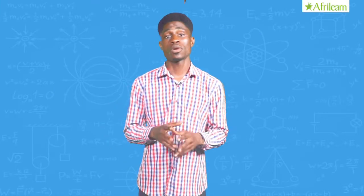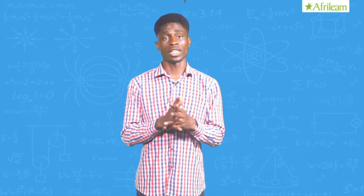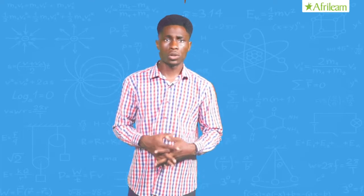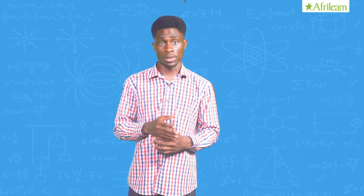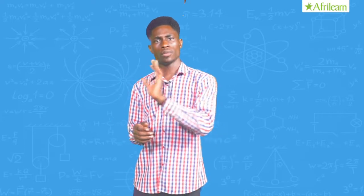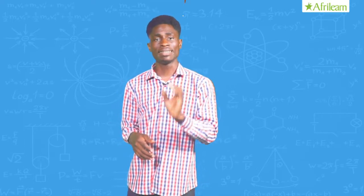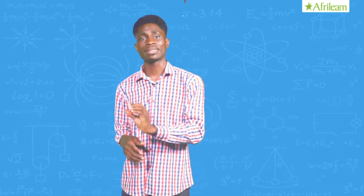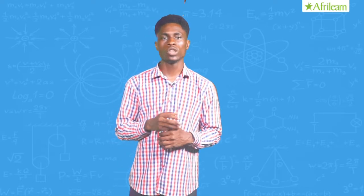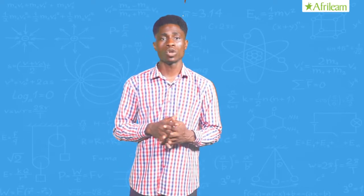Tessie decided to try out what she has been taught in class. She weighed a piece of wood. Afterwards, she dipped the piece of wood in water and discovered it was lighter in weight. On weighing the liquid that poured out from the container, she found that it was exactly the same mass as the wood. Did you know she just proved the concept in physics called up thrust?